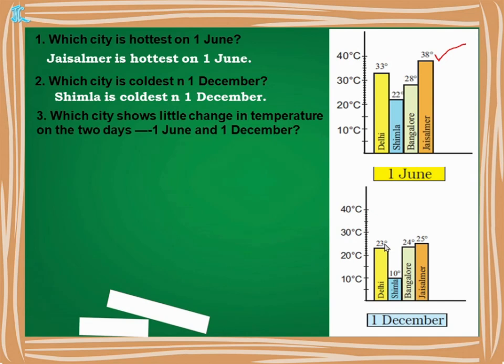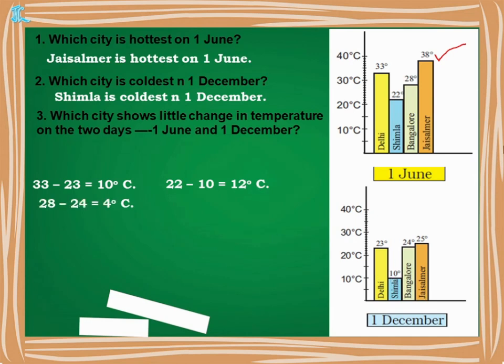Which city shows little change in temperature on the two days — 1st June and 1st December? To find the change, we subtract the temperatures of the same city on the two different dates. Delhi: 33 minus 23 = 10°C. Shimla: 22 minus 10 = 12°C. Bangalore: 28 minus 24 = 4°C.